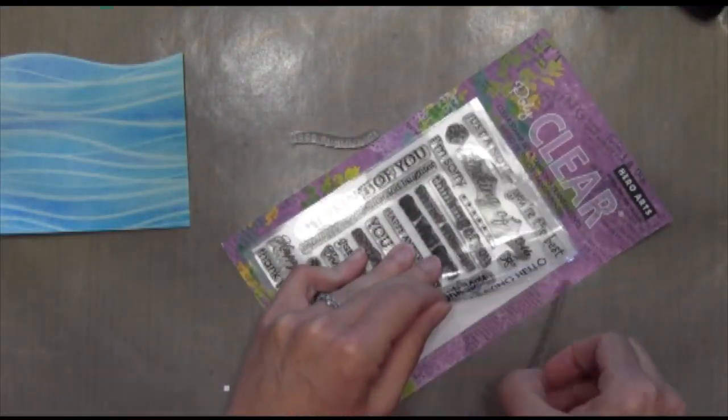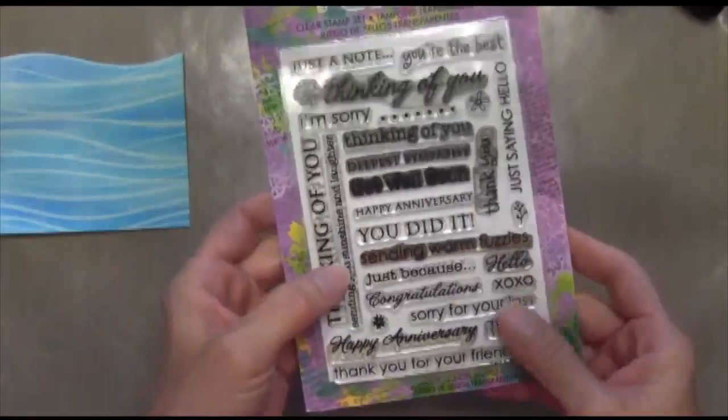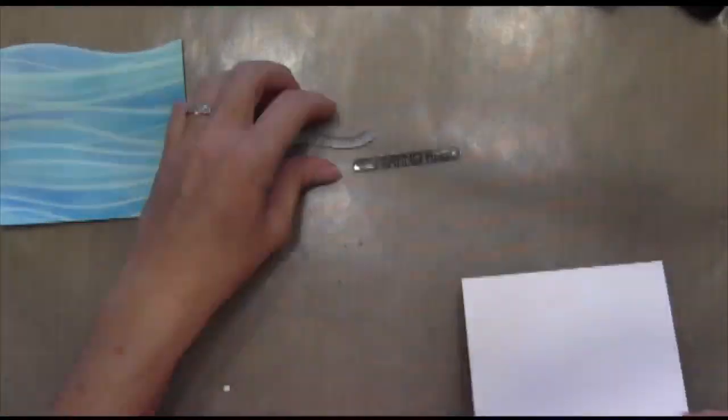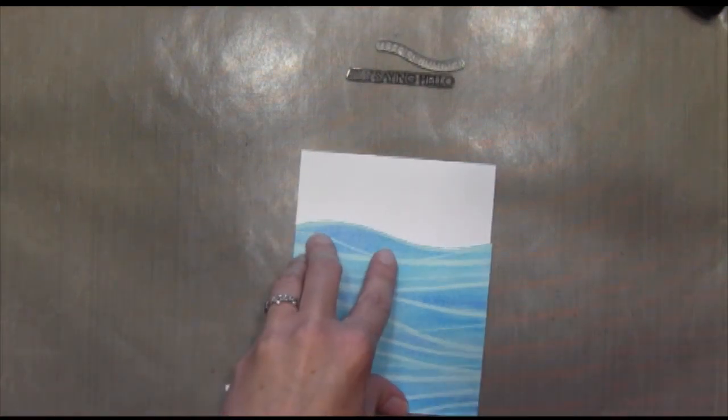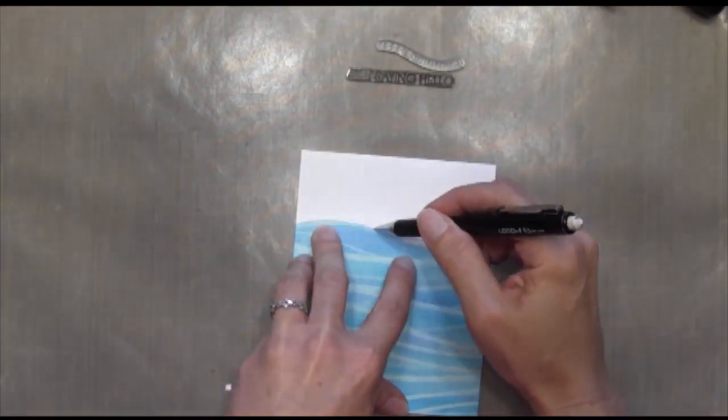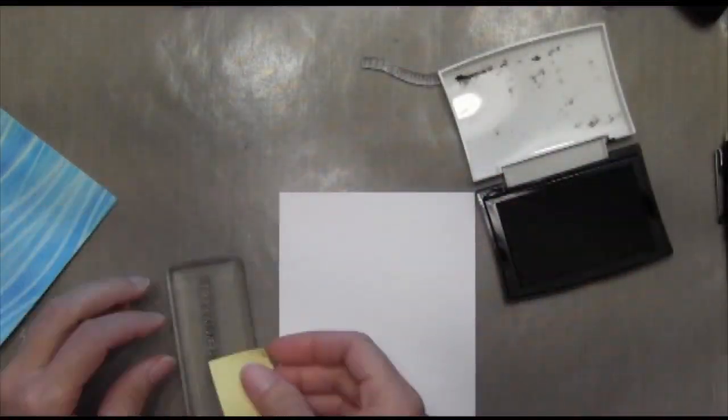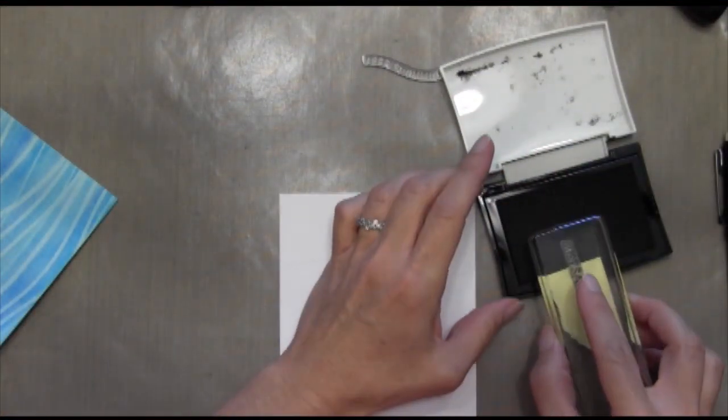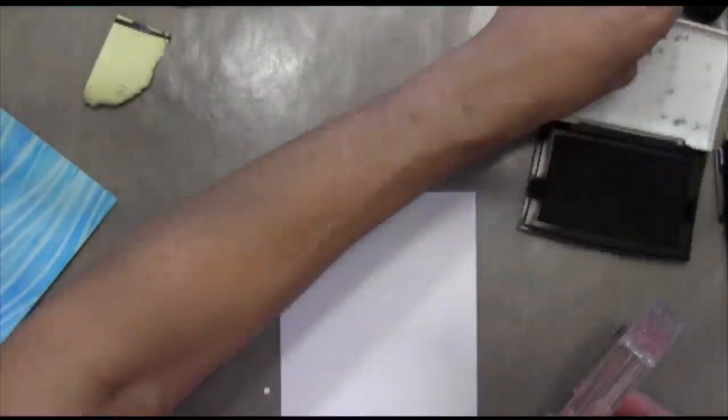All right. So I've got my Keep Swimming and then I just pulled one of my sentiment sets. This is called Everyday Sayings by Hero Arts. It's got so many different sayings. It actually had two of them that had the word just in it. But if you look around your sentiment sets, I'm sure you'll find one that has the word just. And I just put a pencil in there. I outlined the top of the wave so I knew what shape my sentiment needed to take.